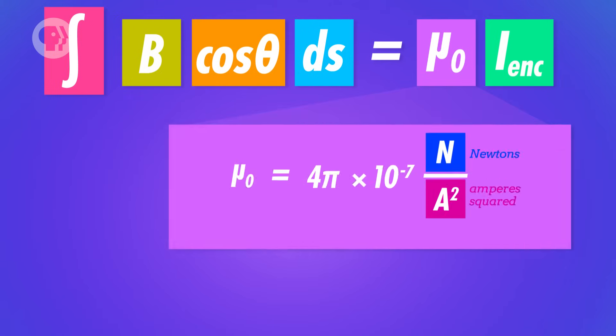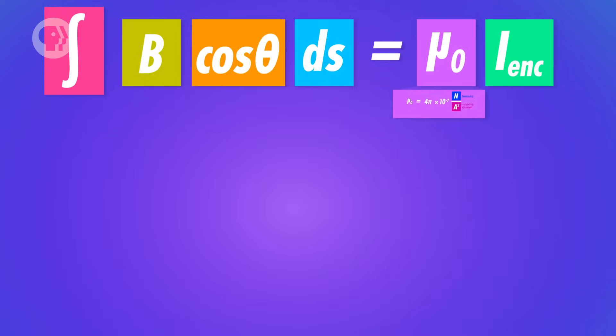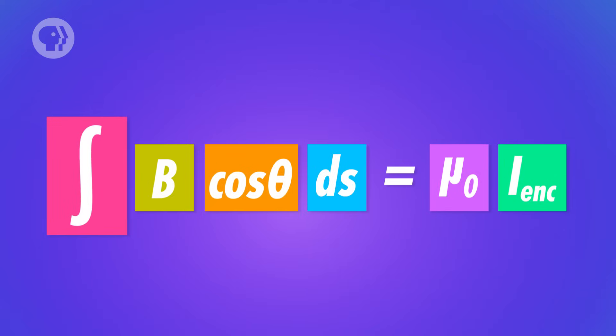The constant mu zero is sometimes called the magnetic constant, and it's equal to 4 times pi times 10 to the negative 7th newtons per amperes squared. Now, you may have noticed that there's an integral on the left-hand side of the equation for Ampère's law. And you might remember that we use integrals when we need to add up lots of infinitely tiny values.